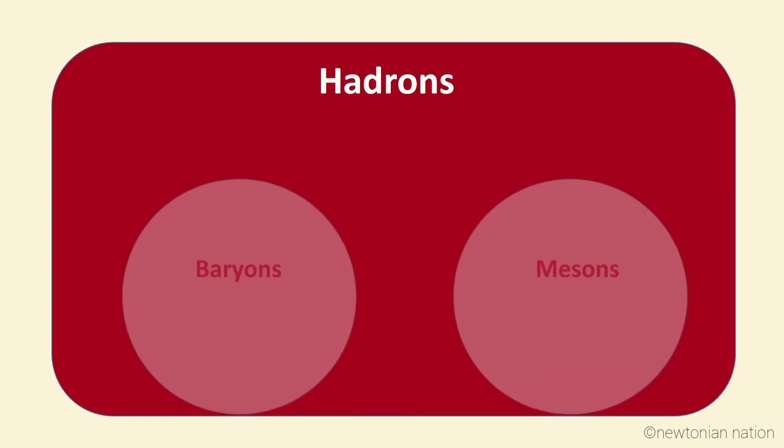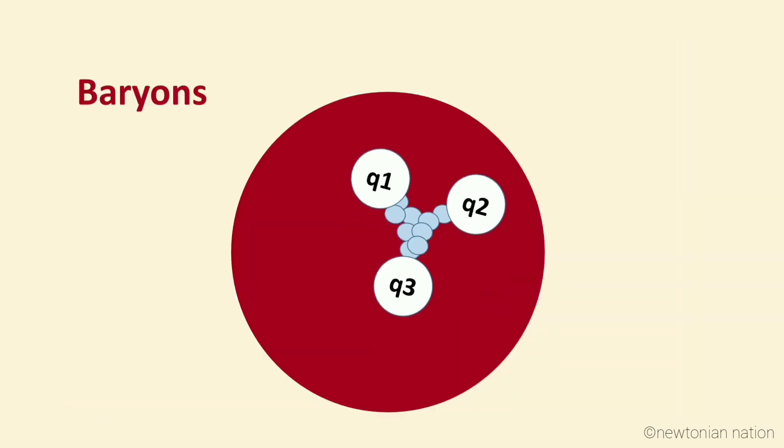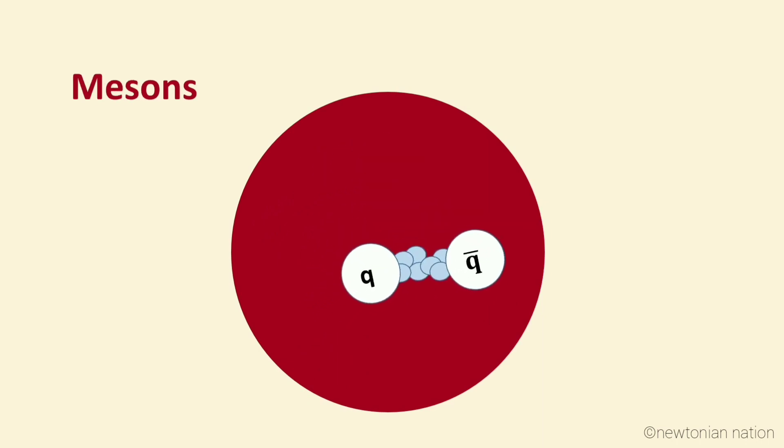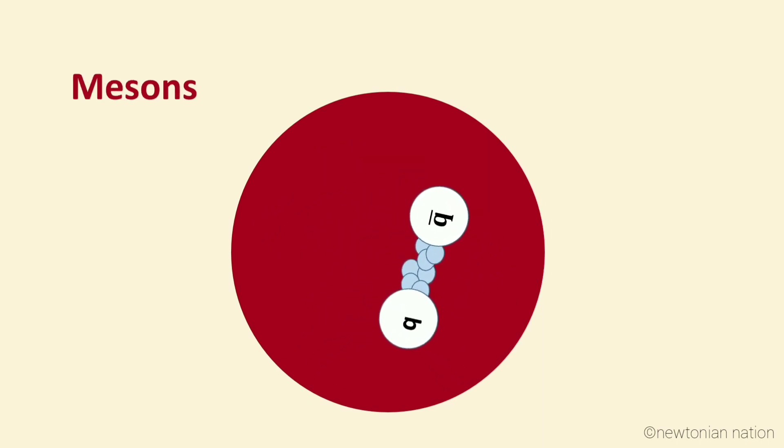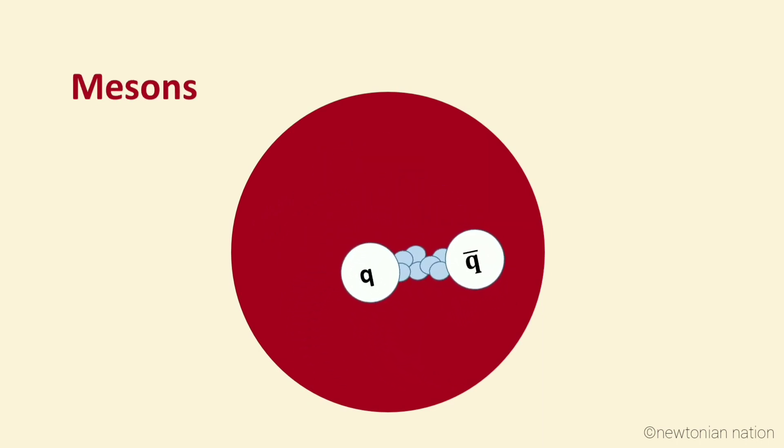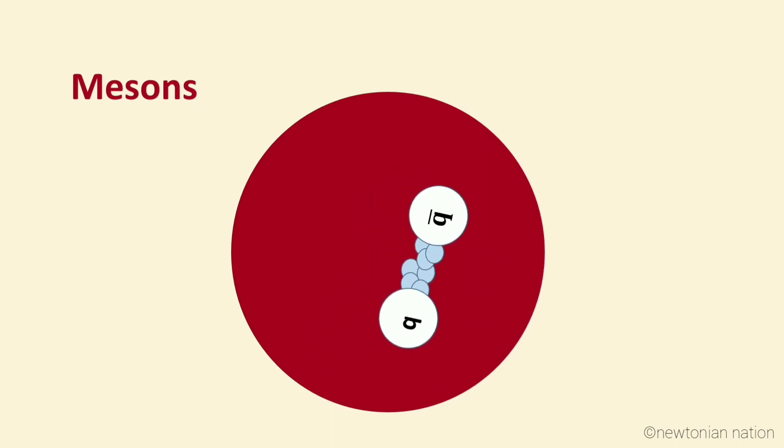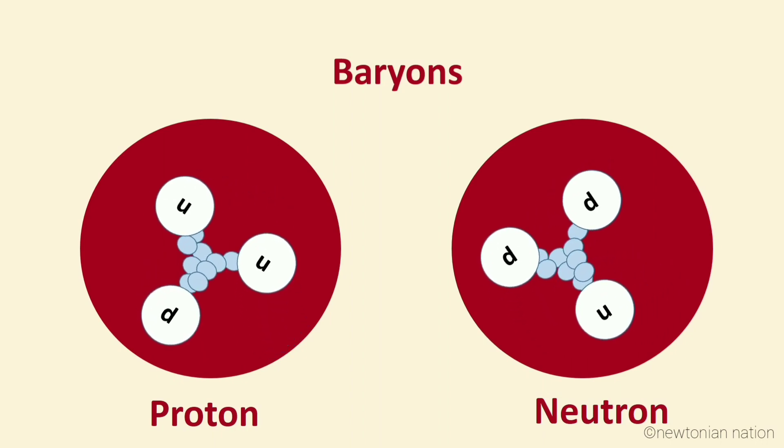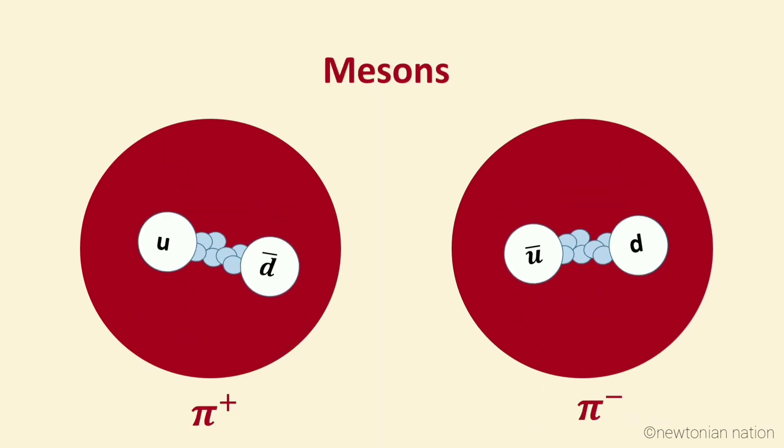Hadrons are categorized into two families: baryons, made up of an odd number of quarks, usually three quarks, and mesons, made up of an even number of quarks, usually one quark and one antiquark. Protons and neutrons are examples of baryons, and pions are examples of mesons.